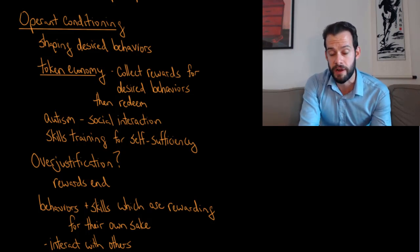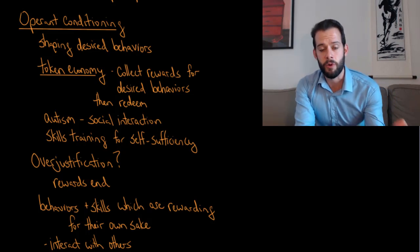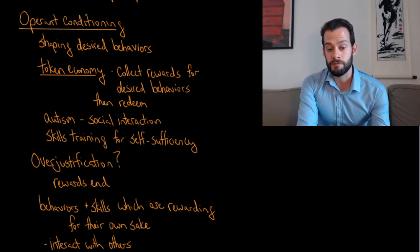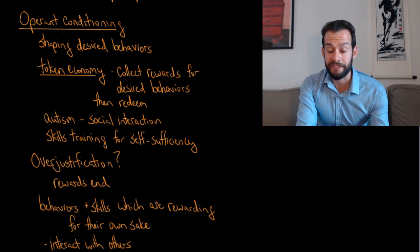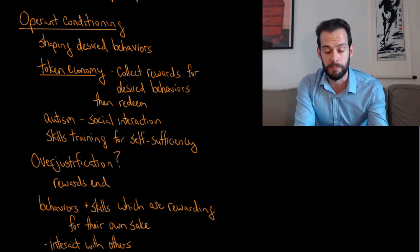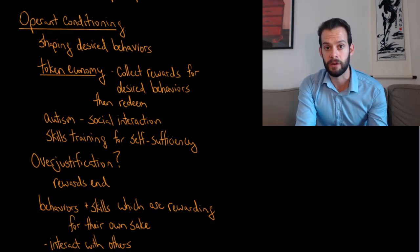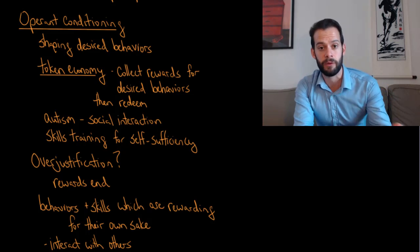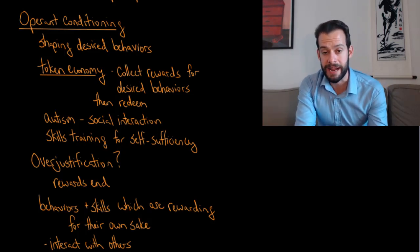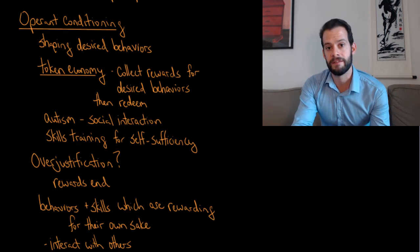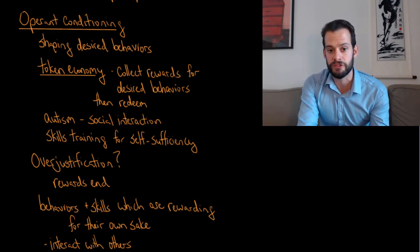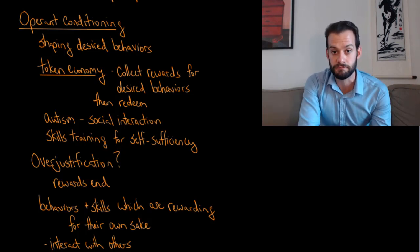We can also see token economies in the use of skills training for self-sufficiency — for people who have disabilities or difficulties with certain types of tasks. Initially they can receive tokens for doing these tasks. For instance, someone learning to complete certain forms accurately might get a token each time they fill out the form correctly with no errors. If they get enough tokens, they get some other reward like an extra dessert or movie time.